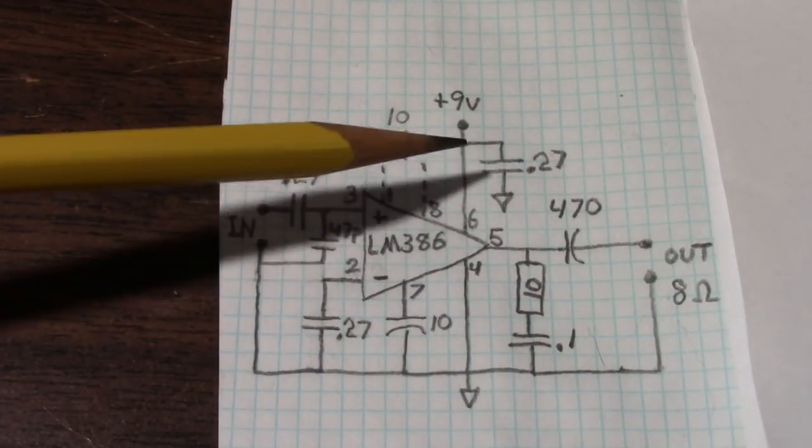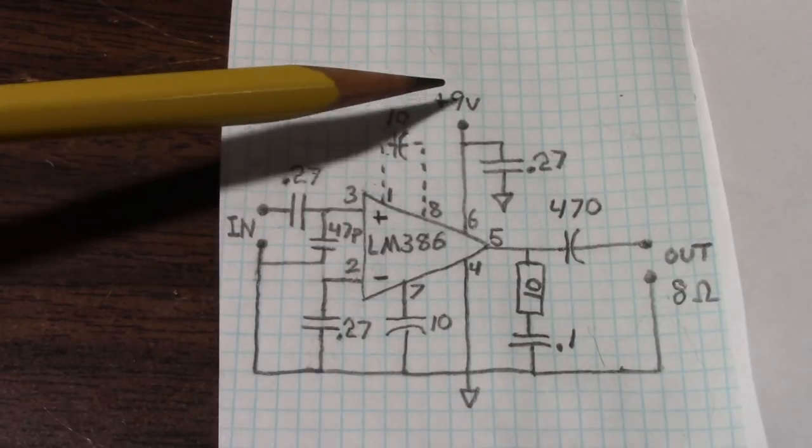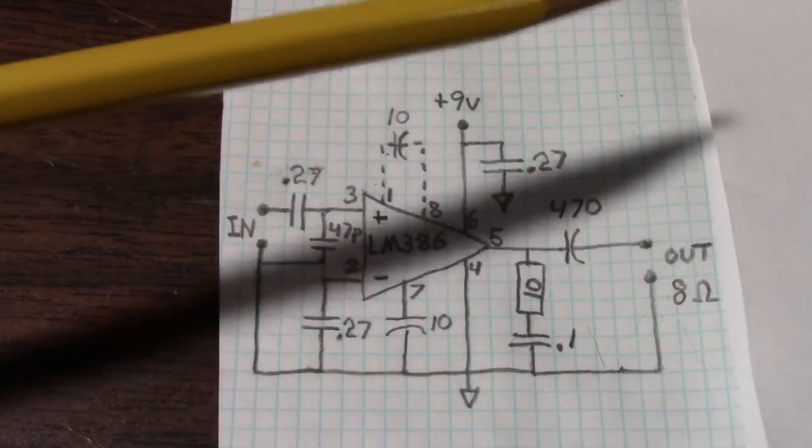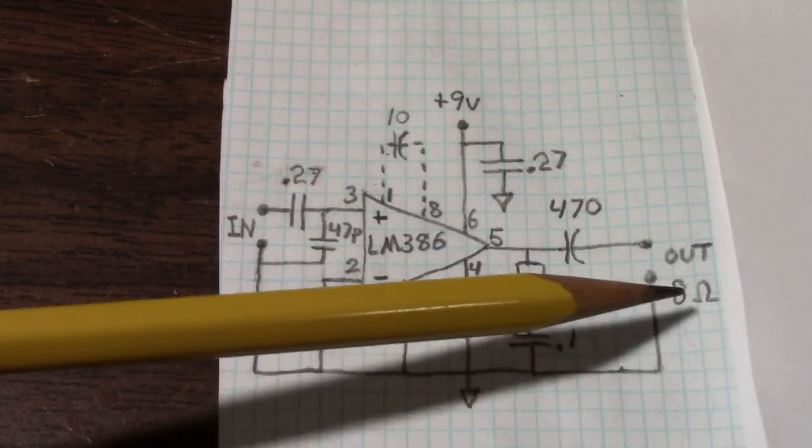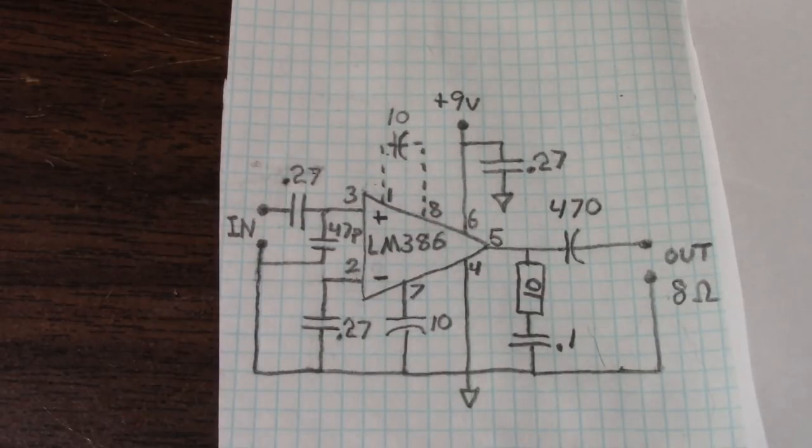This amplifier, you can run it between 5 and 9 volts. I'd recommend 9 volts to get as much power out of it as you can. But you can really only use this chip with 8 ohm loads. It just doesn't work very well with 4 ohm loads. And let me show you why.